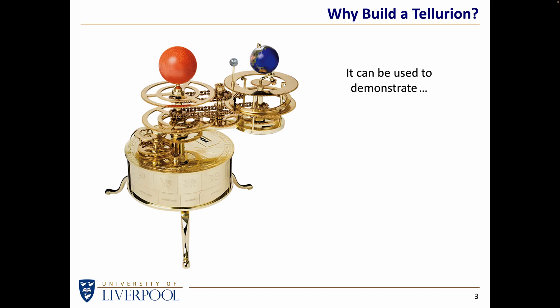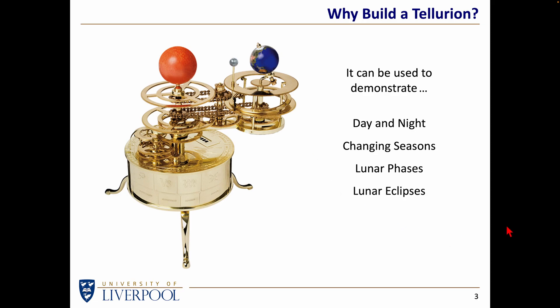As well as being a rather nice ornament to put on your mantelpiece, if you have a large enough mantelpiece, a Tellurian can be used in principle to demonstrate a number of different factors. Because of the rotation of the Earth, we can use it to demonstrate day and night. Because the Earth's axis is tilted at approximately 23.5 degrees, it can also demonstrate the changing seasons. It can show lunar phases as the Moon goes around the Earth, and it takes into account the tilt of the Moon's orbit to show lunar and solar eclipses.